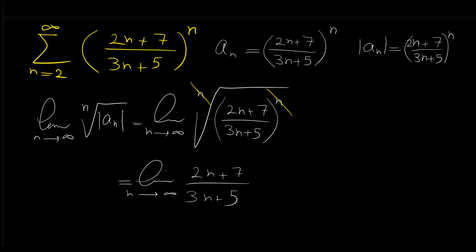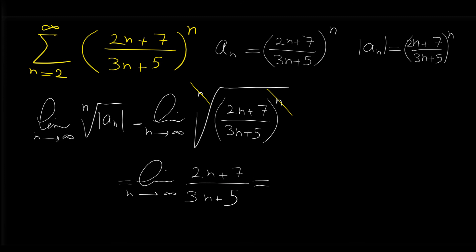It is obvious that this limit equals 2 over 3. Remember that when n approaches infinity and we have a limit in fraction form, we keep only the dominant terms from the top and the bottom. In the numerator, between 2n and 7, the dominant term is 2n, so we keep 2n and ignore 7. In the denominator, we keep 3n and ignore 5. So 2n over 3n is 2 over 3, and this limit equals 2 over 3. Since 2 over 3 is less than 1, the given series is convergent.